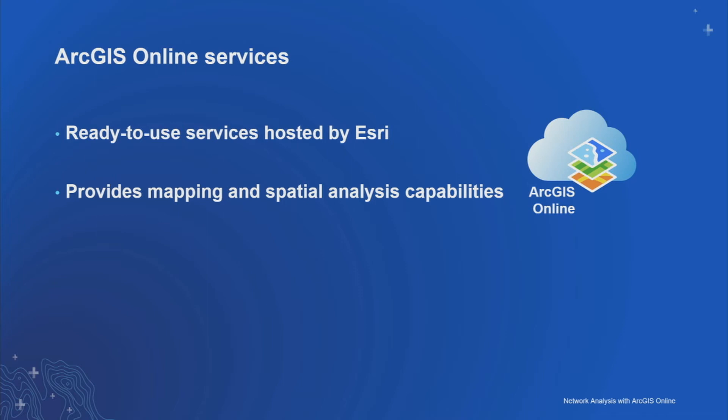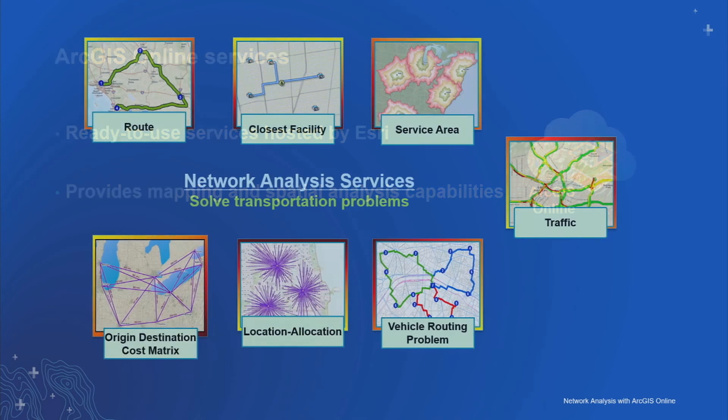ArcGIS Online provides other services which do mapping and other types of spatial analysis. Routing and network analysis is just one set of services included as part of your ArcGIS Online subscription. Network analysis services consist of seven different types of services, and I'm going to describe each in more detail.